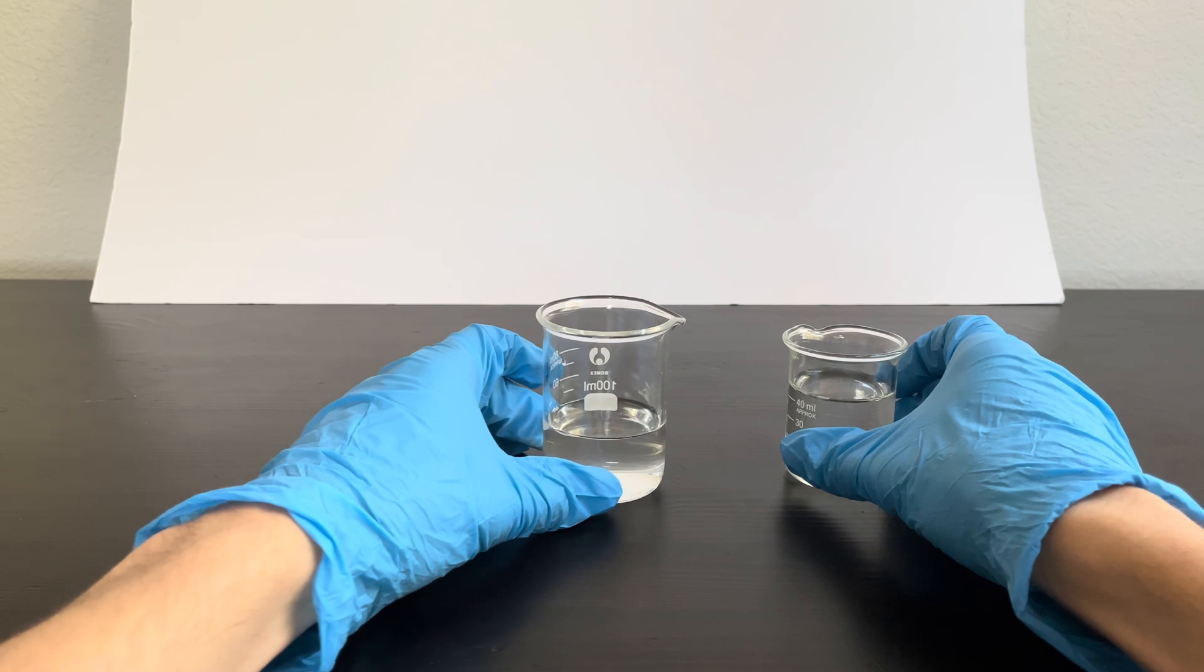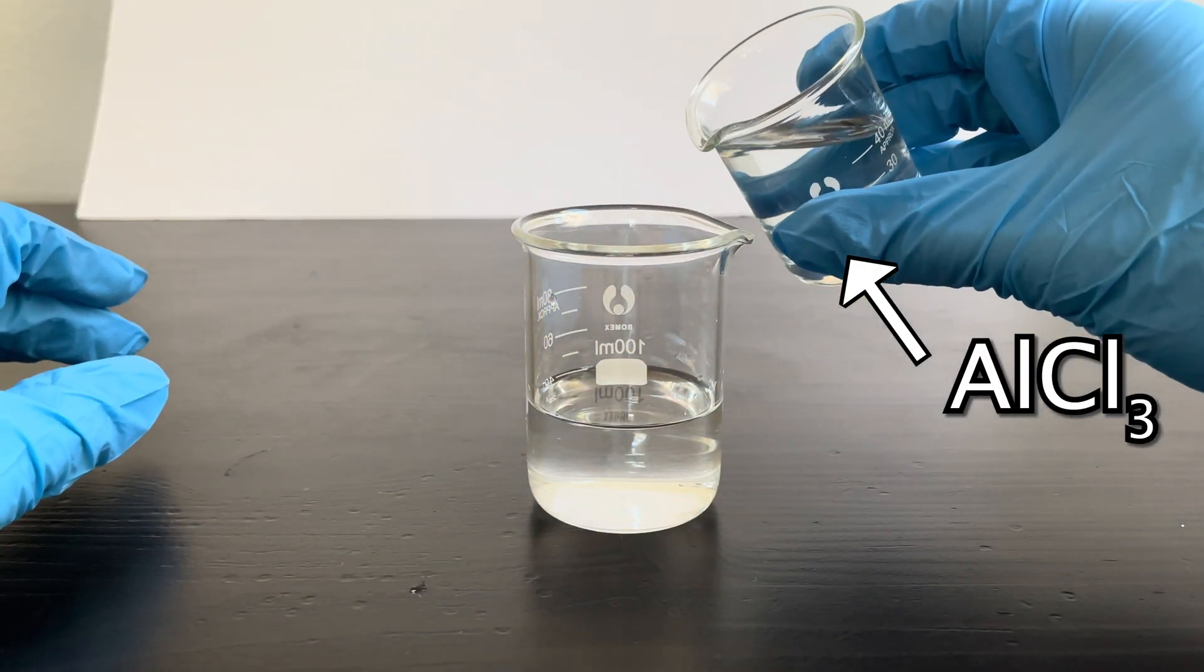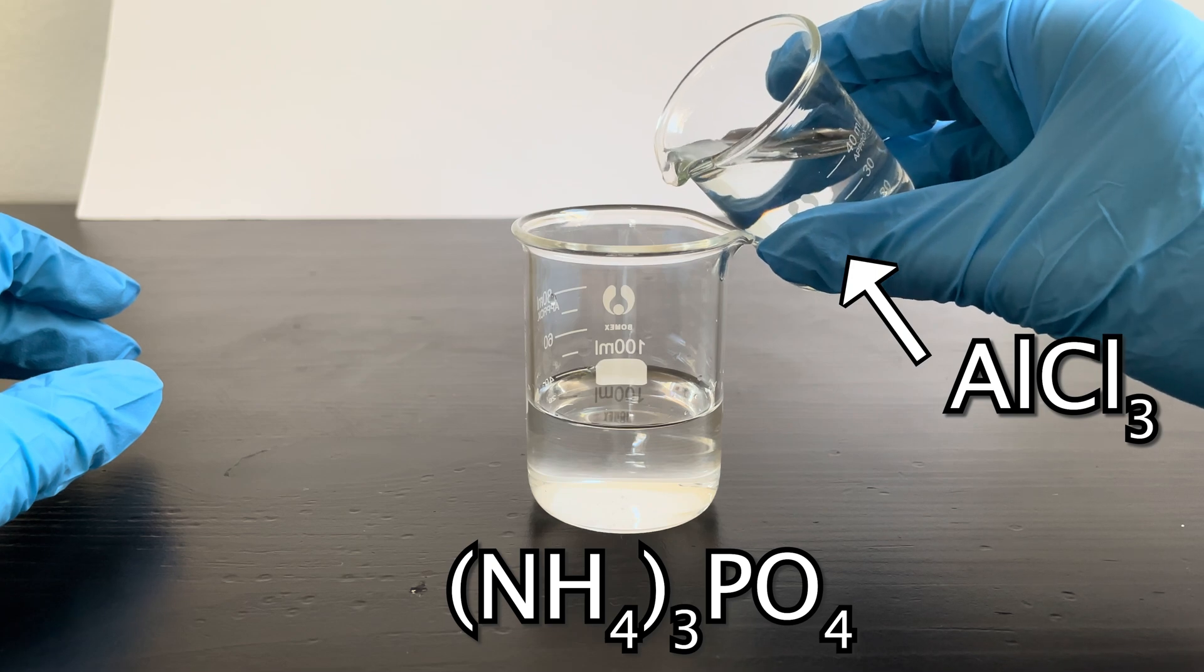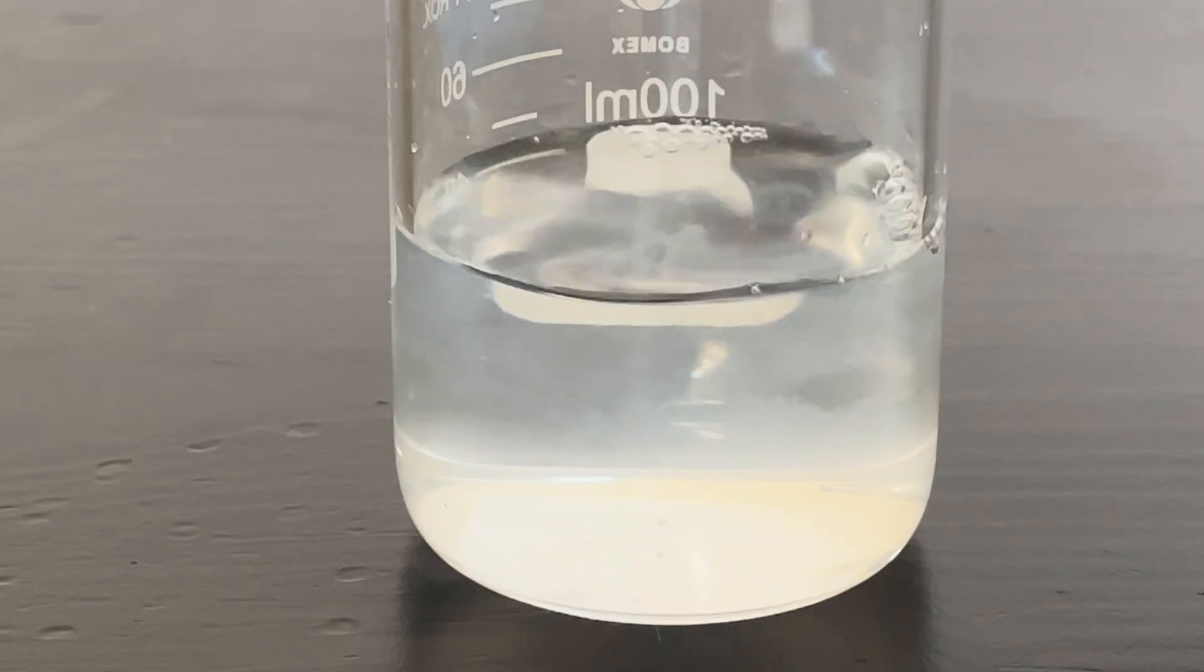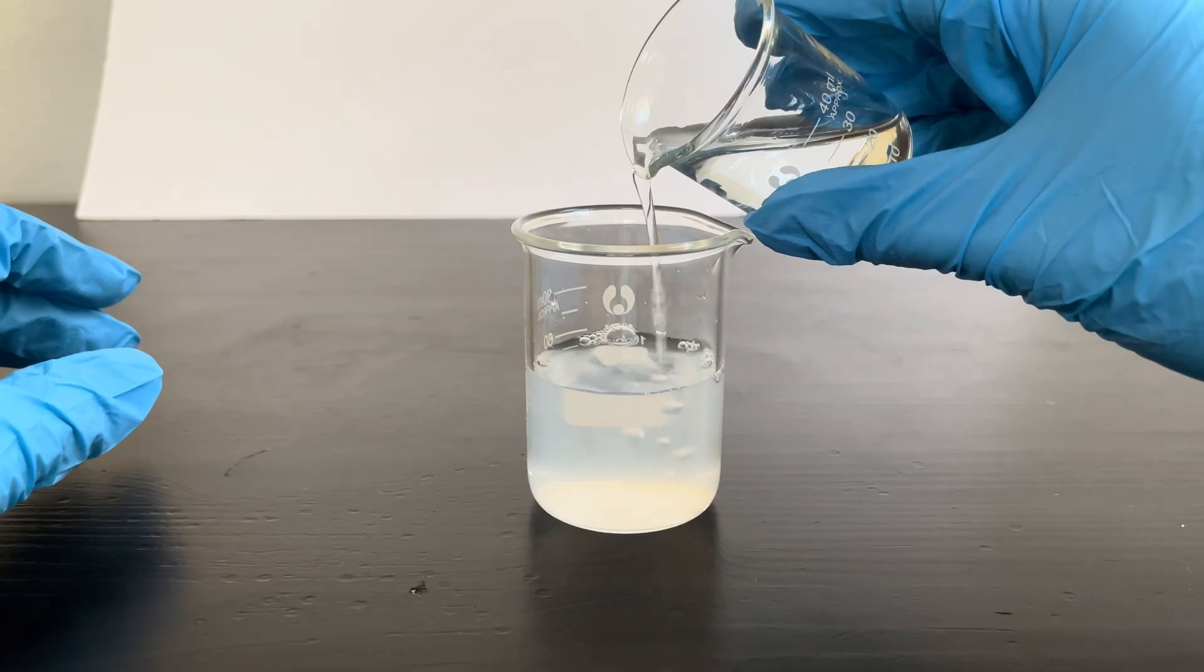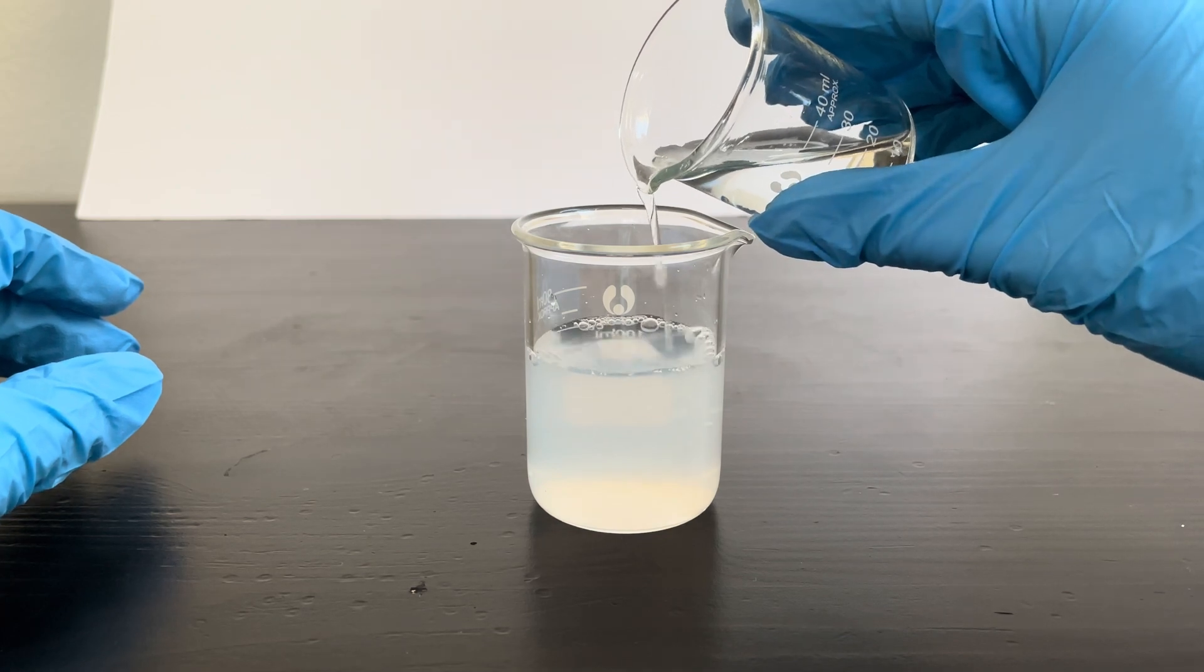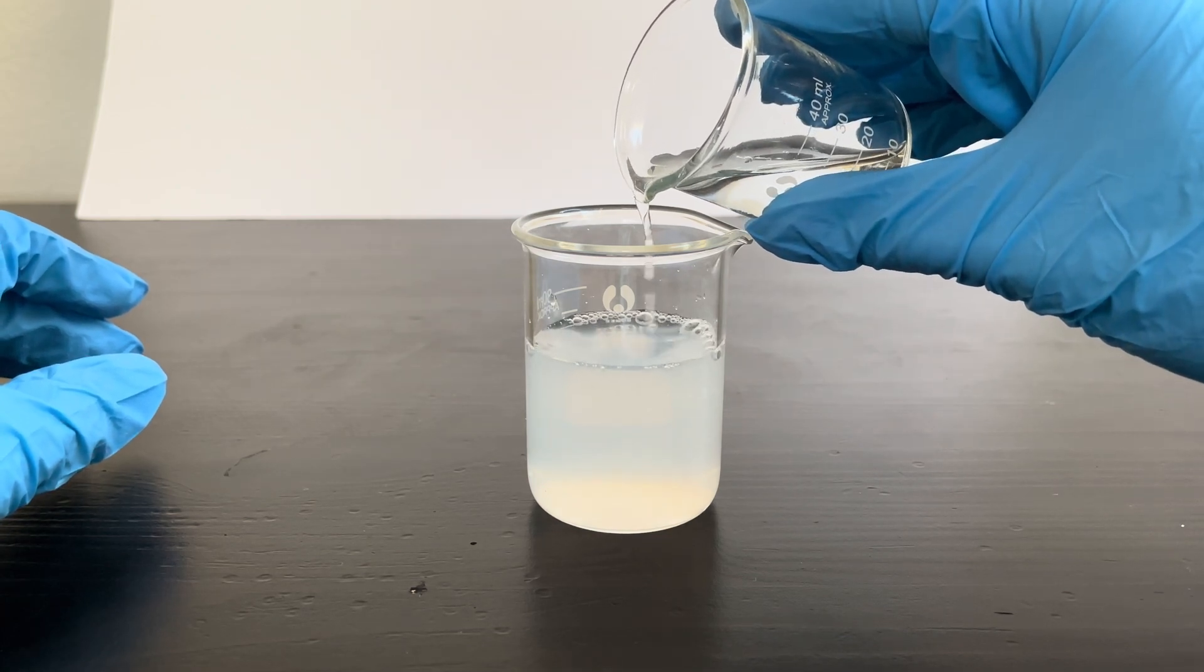Having both solutions fully dissolved, I'm going to slowly add the aluminum chloride solution to the ammonium phosphate solution and we will see a white precipitate form. There it is. That murky white color tells you that some insoluble compound has formed. In other words, a precipitate. That precipitate is the chemical we want to create, aluminum phosphate.